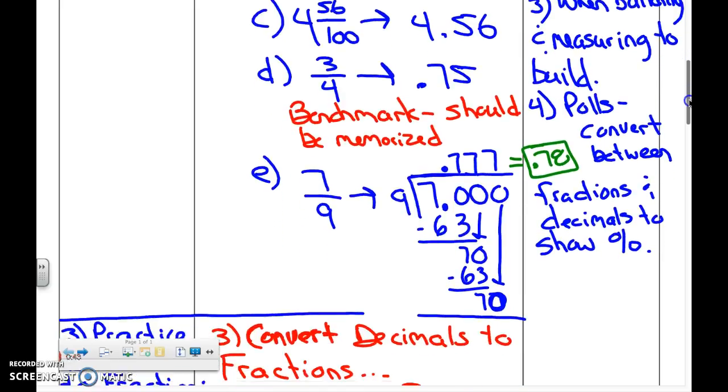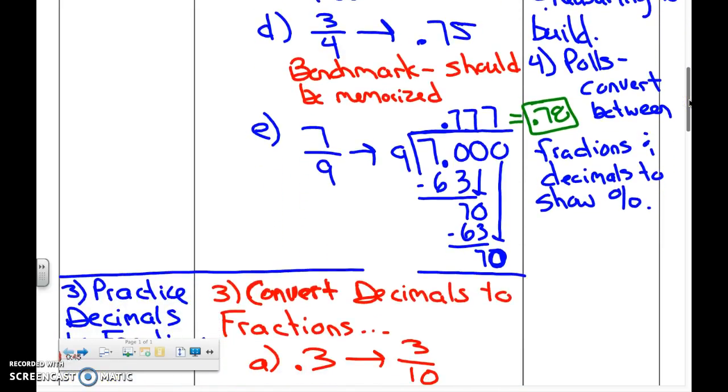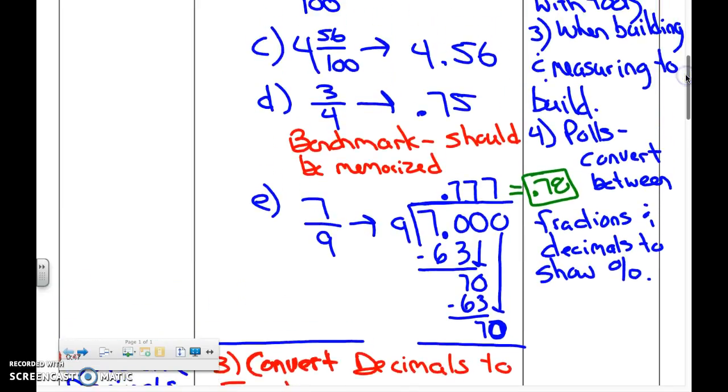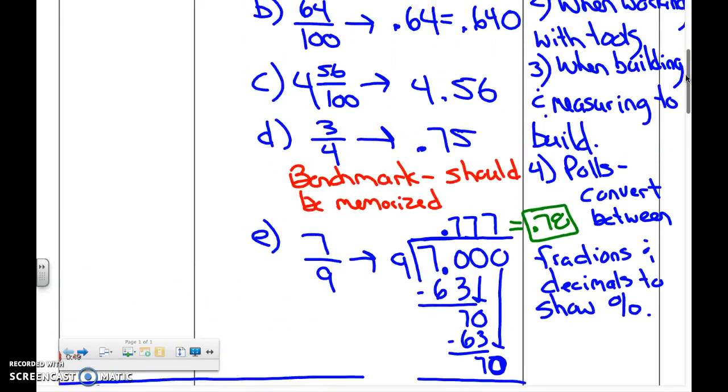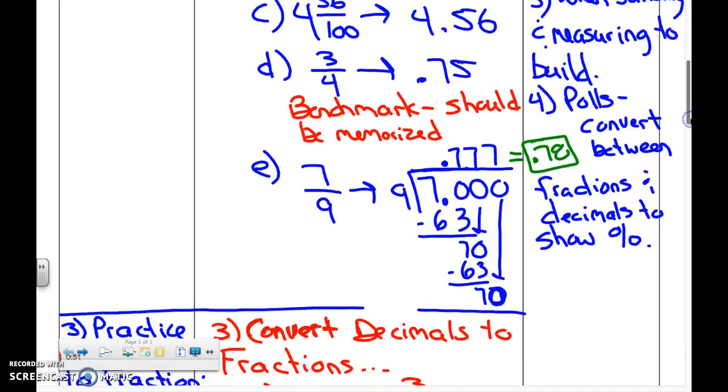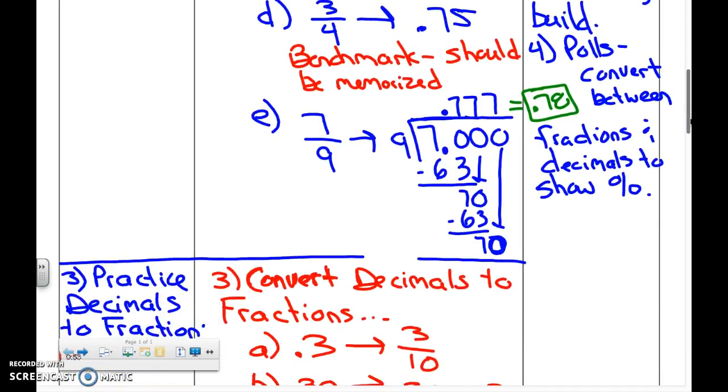Letter E - because seven-ninths is not a benchmark and doesn't have a nice denominator like 100 or 10, you have to actually do the math either on a calculator or the long way.